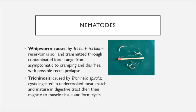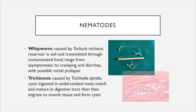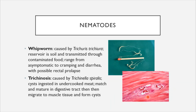And lastly, we have trichinosis, caused by Trichinella spiralis. These form cysts that are ingested in undercooked meat. They mature in the digestive tract and then migrate into muscle tissue where they form cysts. With this last nematode, we have reached the end of Chapter 24.